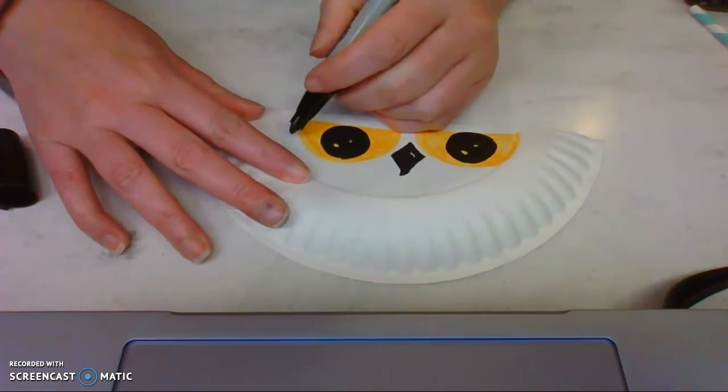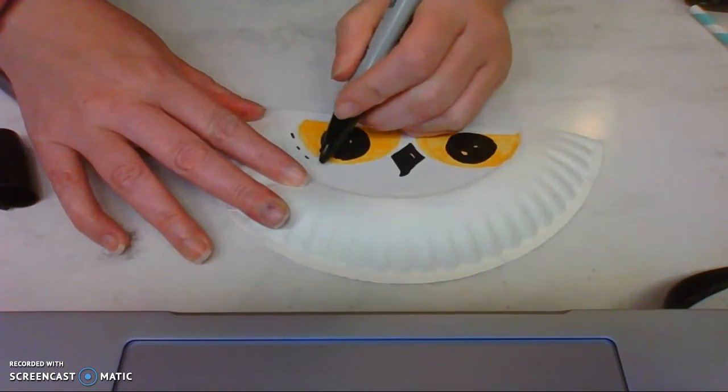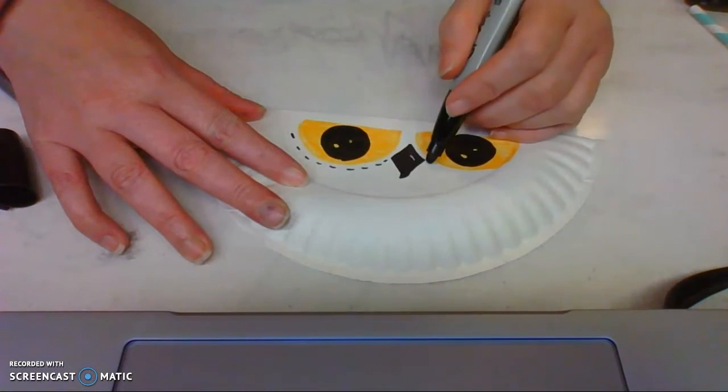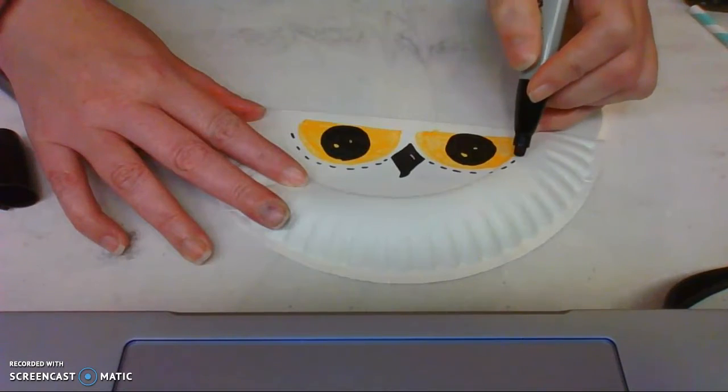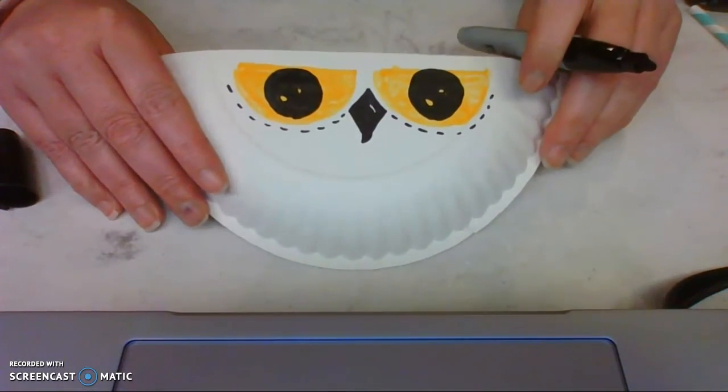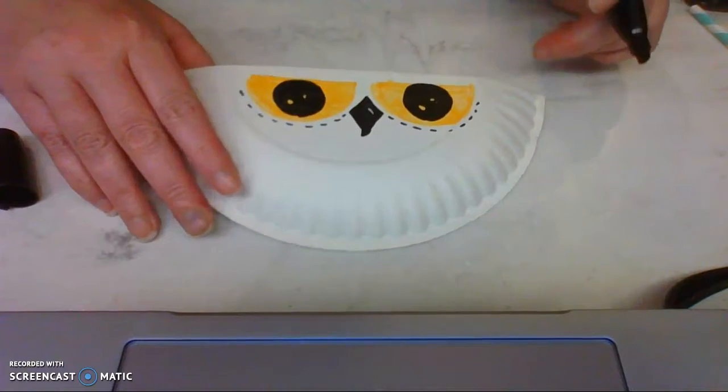And then right here around my eyes, I'm just going to do dashes, or a dotted line right around the owl's eyes.